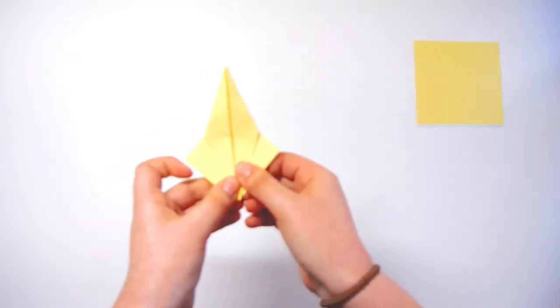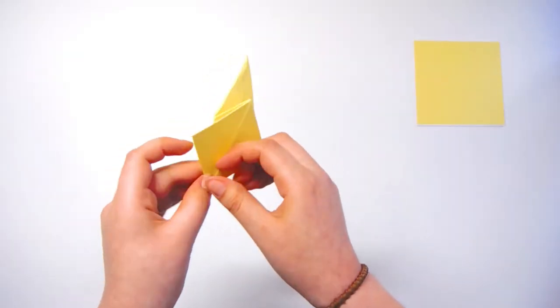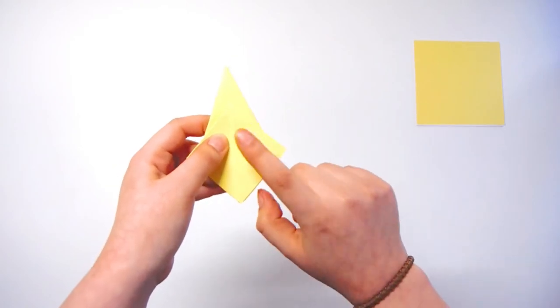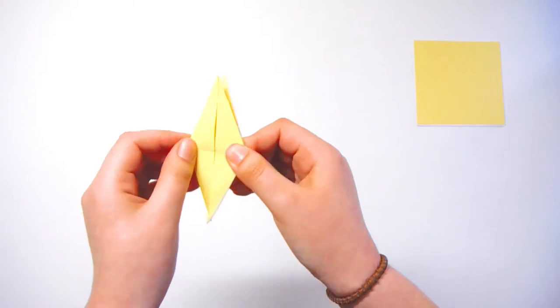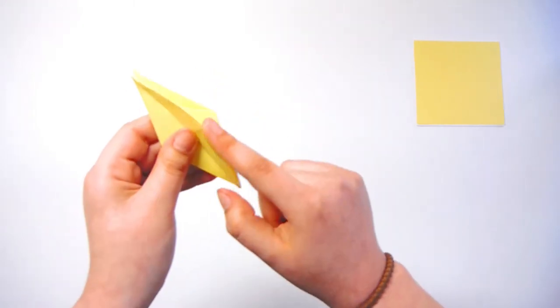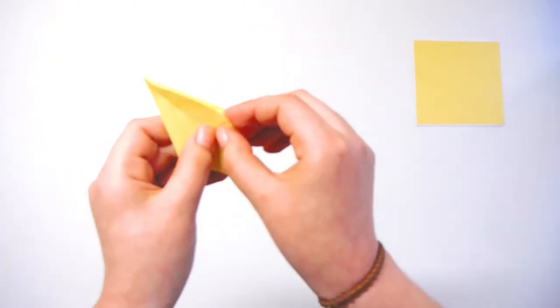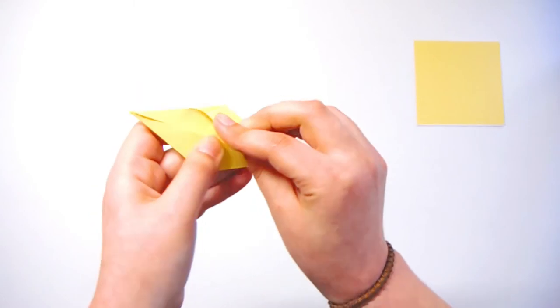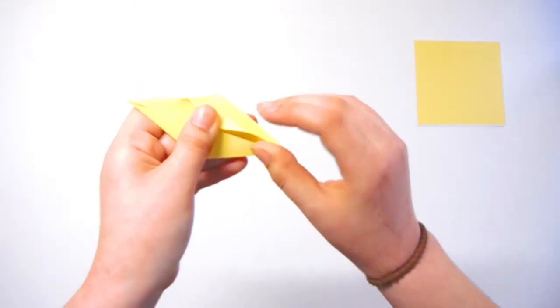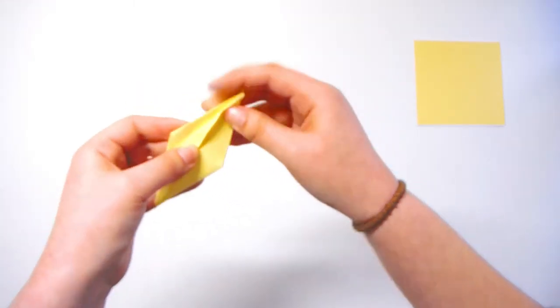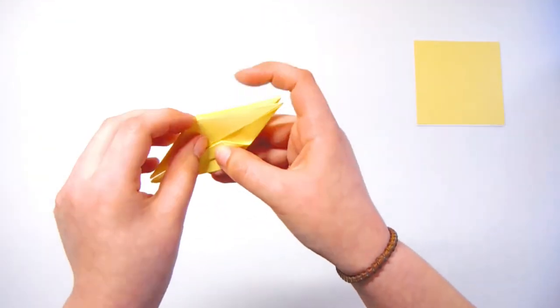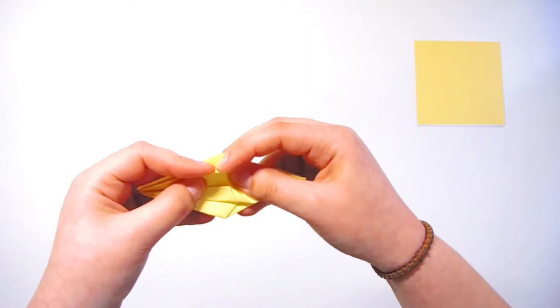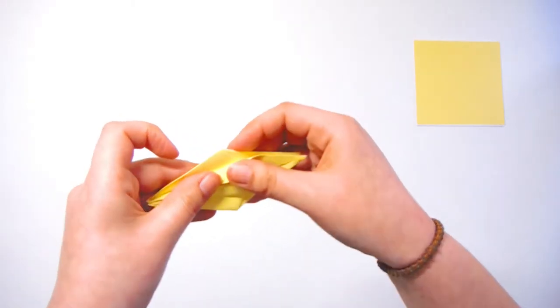So now you have a piece that looks like that and what you want to do is you want to flip it over and do the exact same thing to this side. So now you have a piece that looks like this. You are going to take this corner right here and you want to fold it inwards towards that middle crease and you want to fold it all the way down. So you want to do the same thing to the other side so that both sides have those corners folded in.